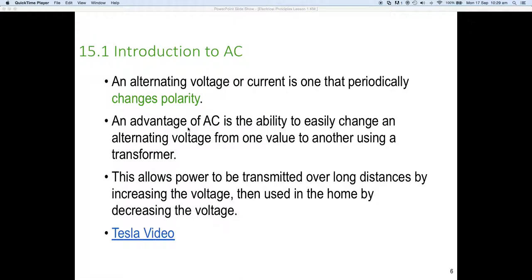As that polarity changes, the magnetic field is increasing and decreasing, reversing, increasing, decreasing, reversing, which means the magnetic field is going up and down, up and down, and crossing the conductors in the transformer.